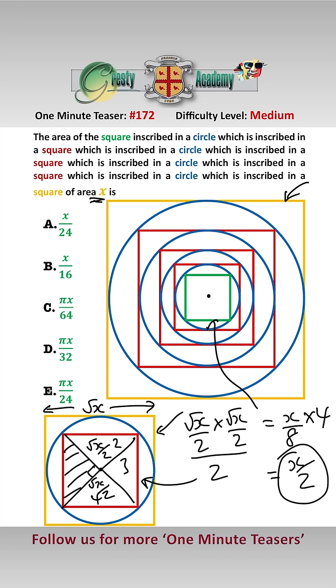Using exactly the same logic, we can find the area of the third square, the fourth square and the fifth square. So therefore this square area is x over 2. This one is half of that, which is x over 4.